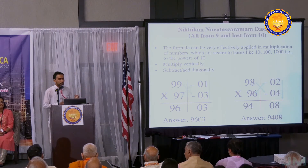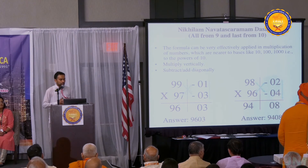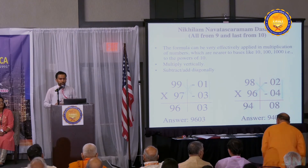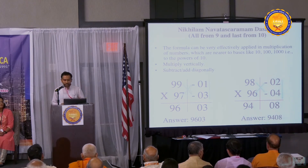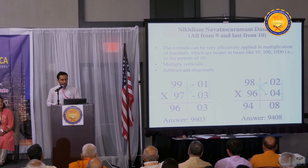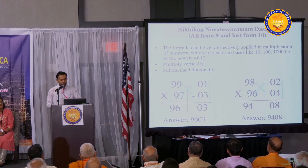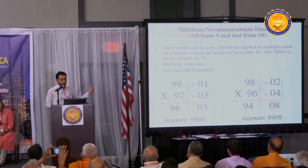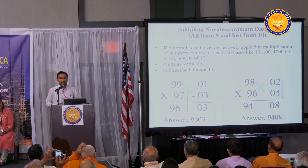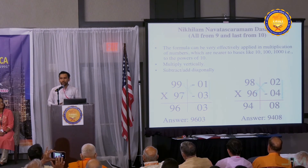Now step two is we subtract diagonally. We can either do 97 minus one or 99 minus three — both are going to give us the same answer. So what's 97 minus one? 96, right? So we put 96 on the left side and your answer would be 9603. That's how easy it is.